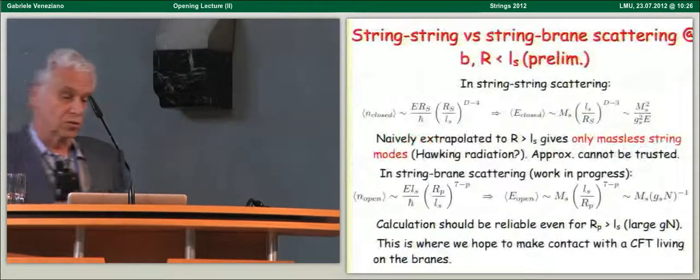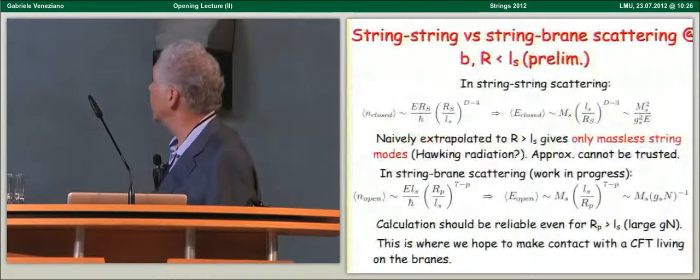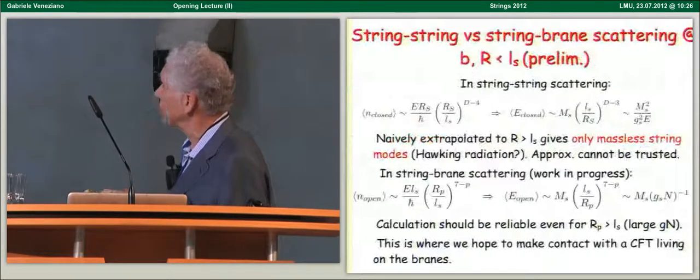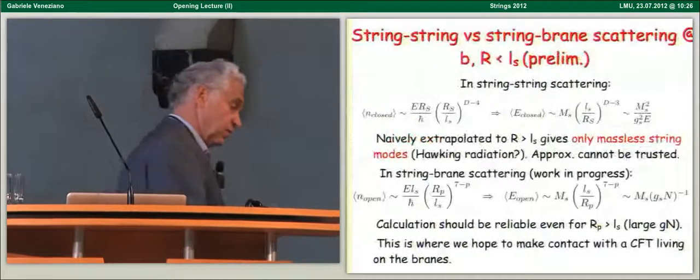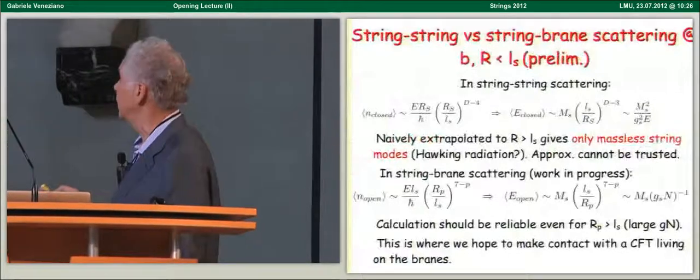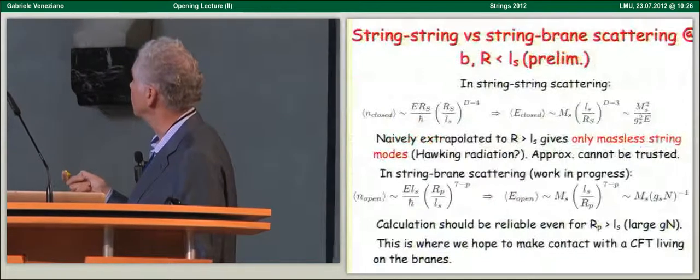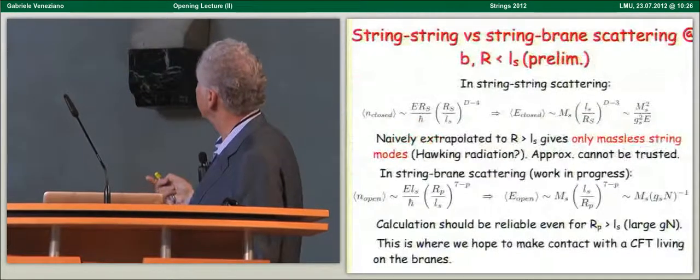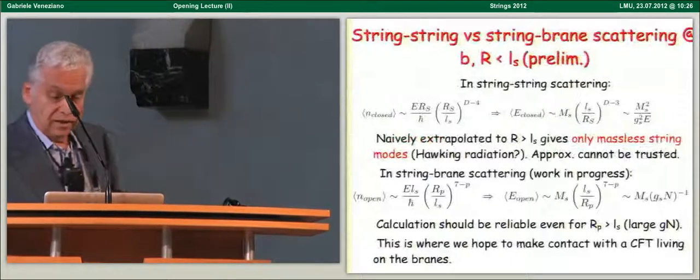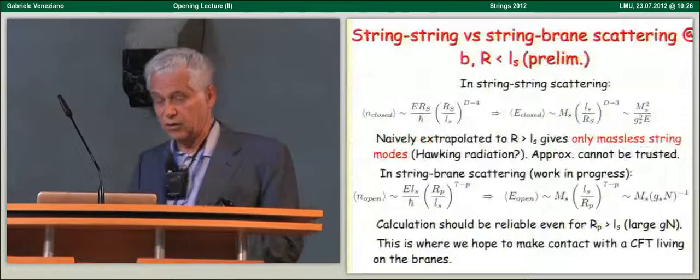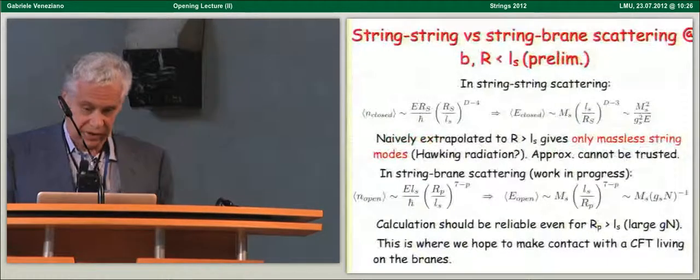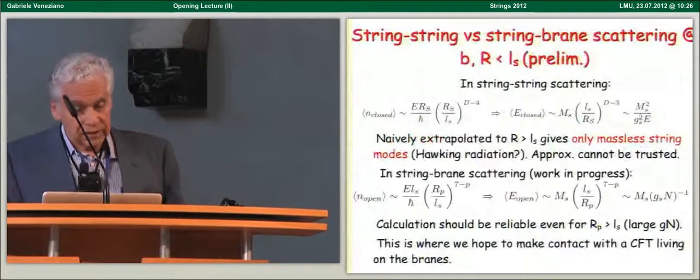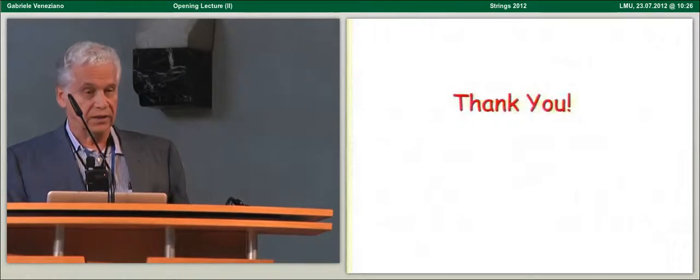So, in string-brane scattering, the situation looks to be easier, and the analog results are that the number of open strings that you form should scale in this way, but I remind you now, Rp is just the radius of the geometry produced by the brane system, so it doesn't depend on the energy itself. So, the average open string energy, again, in string units, scales like Ls over Rp, and when you write it down in terms of G string and n, is something which can now be sent to zero if you go to large enough Gn. And so, we hope that the calculation will be done, will be reliable, even in that regime, and this is where we hope to make contact with the CFT living on the branes.